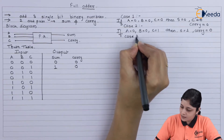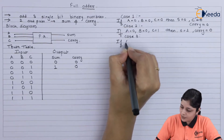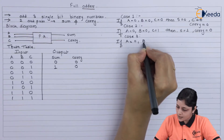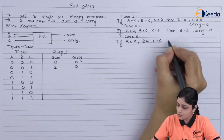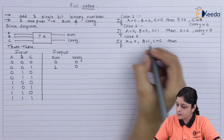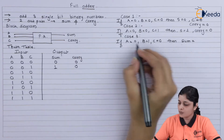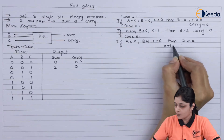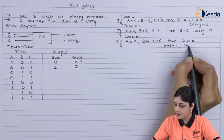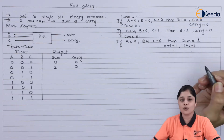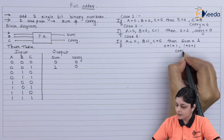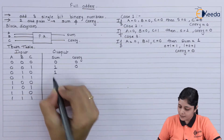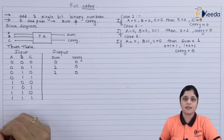Case 3: if A equals 0, B equals 1, and C equals 0, then we calculate: 0 plus 1 gives 1, then 1 plus 0 gives 1, so sum equals 1 and carry again equals 0. Final sum is 1 and carry is 0.